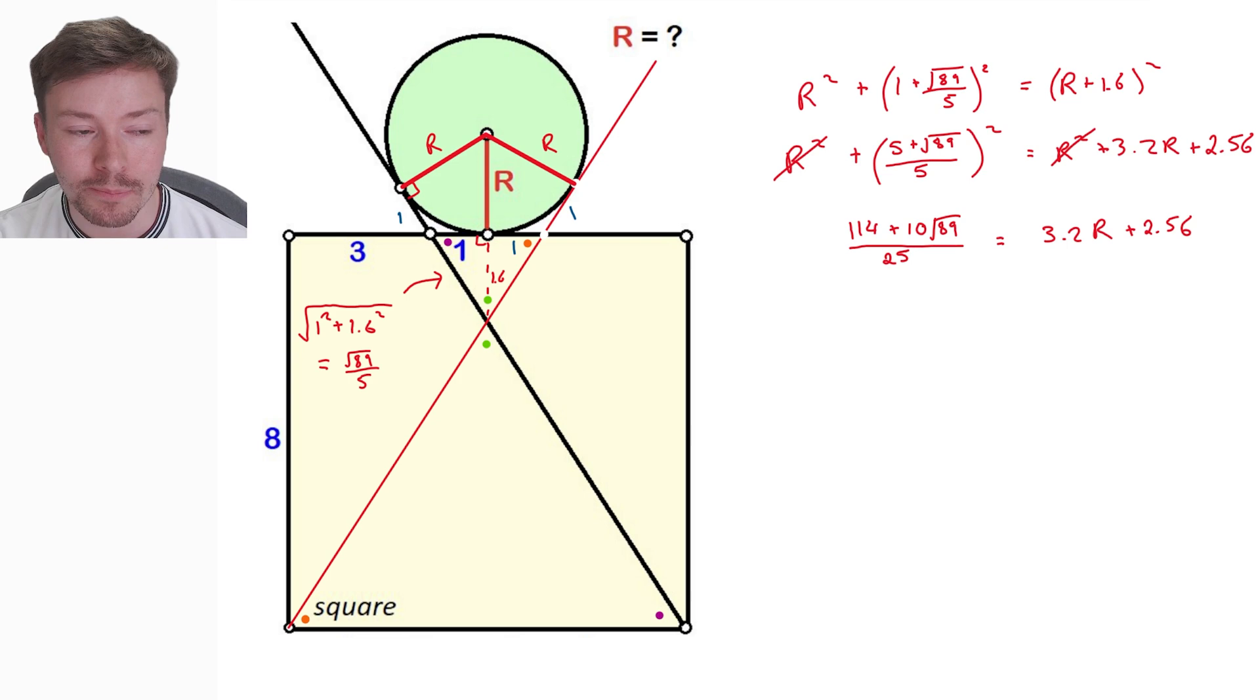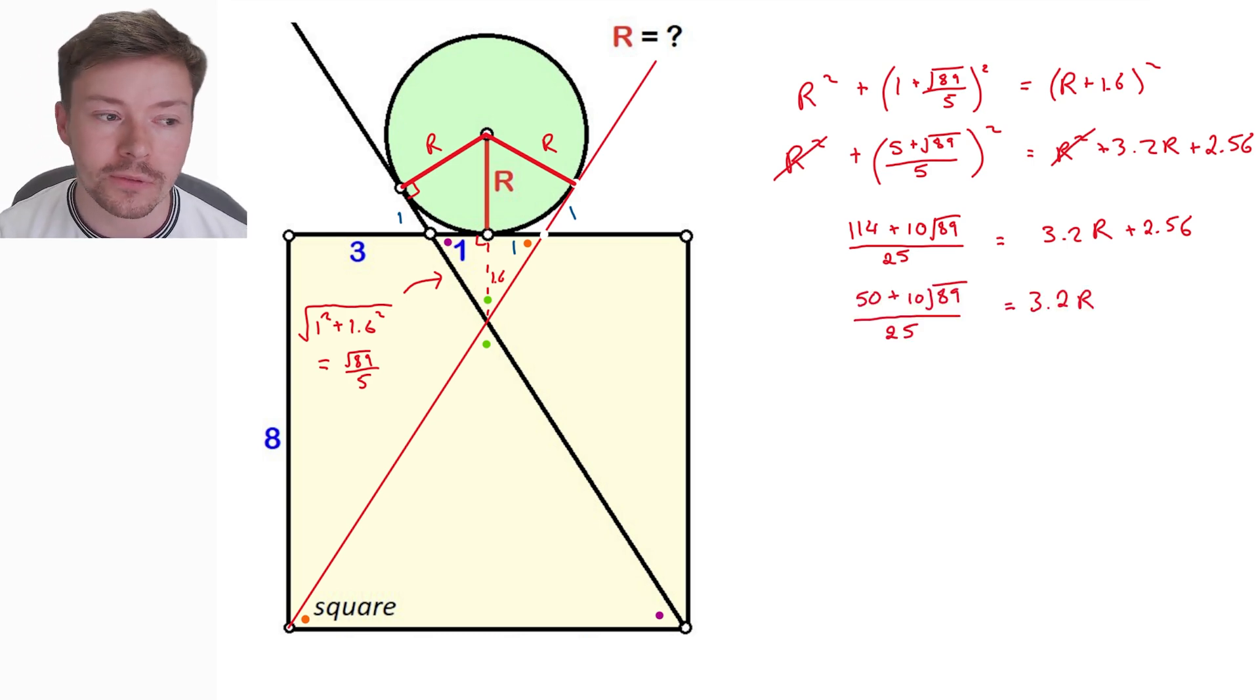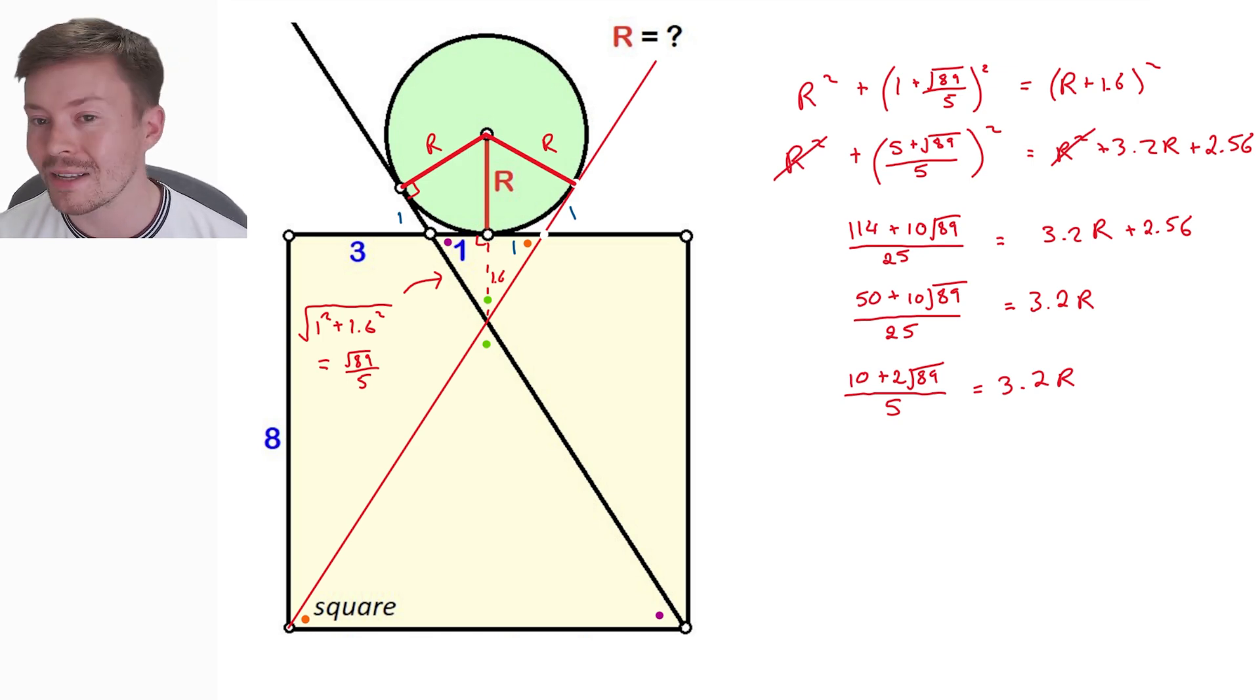I'm going to take away 2.56 from both sides here. Actually, 2.56 times by 25 is quite a nice number, so it's 64. If I take that away from the left-hand side fraction, I'm taking away 64 over 25. So what I really need to do is 114 take away 64, which leaves me with 50 plus 10 root 89 over 25 is 3.2R. It's starting to look a little bit nicer. Then I'm going to simplify that fraction. So that is 10 plus 2 root 89 over 5 is 3.2R. I'm going to divide by 3.2 on both sides, and I'm going to get an exact answer of 5 plus root 89 over 8 is equal to R, and that's the radius.